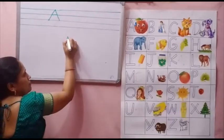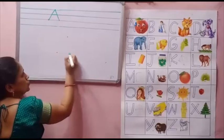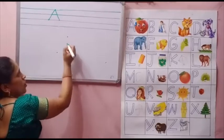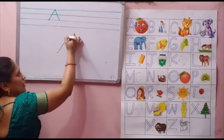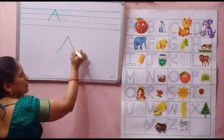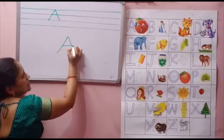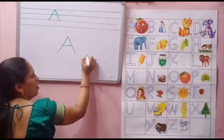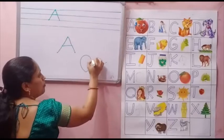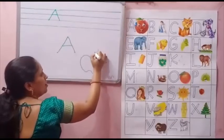Again one, two, three dots. Slanting line. Again up to down slanting line. And within slanting line. A. A for apple.